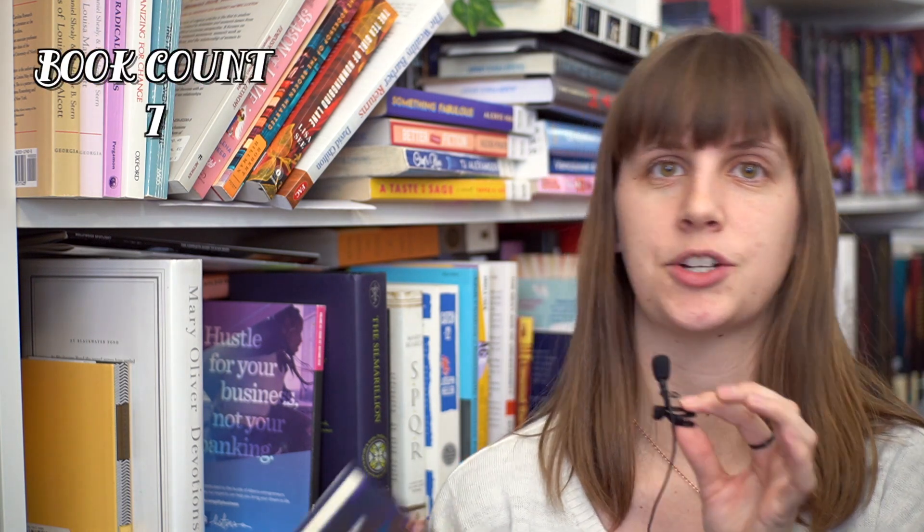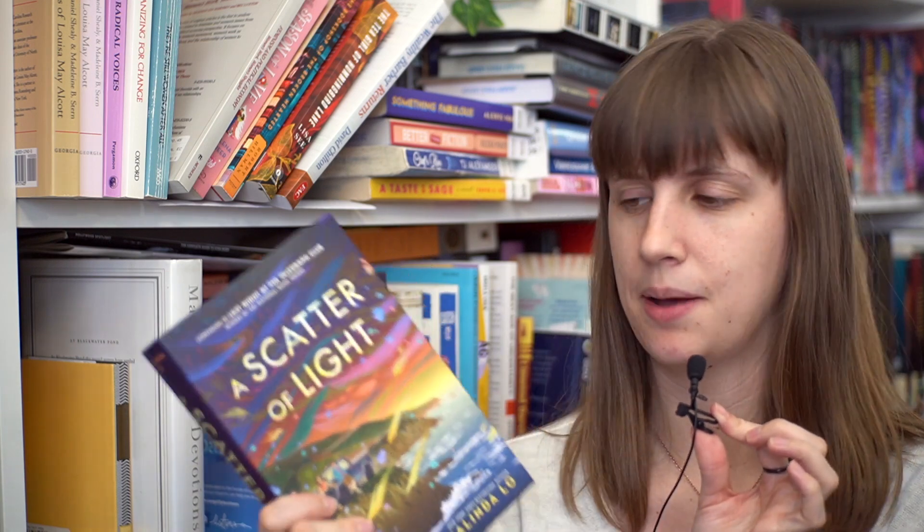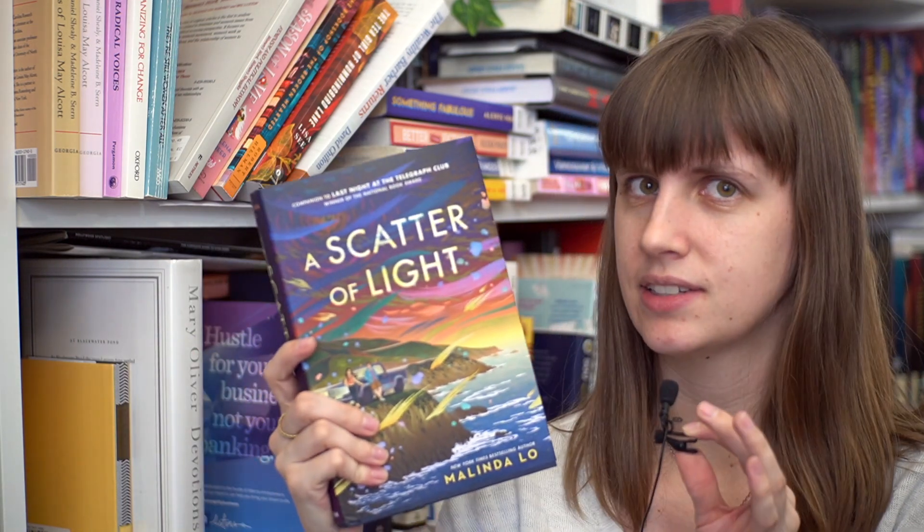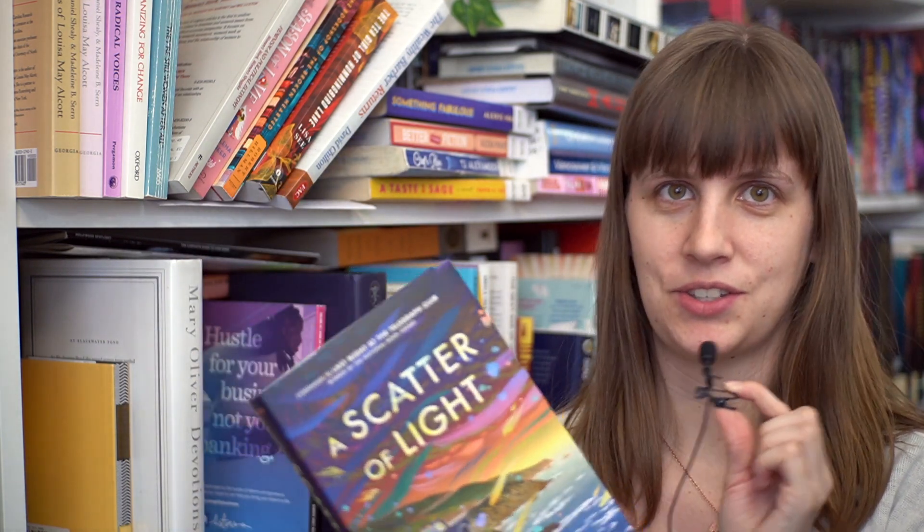Then another book that was sent to me because I took part in an up and coming books presentation so that is A Scatter of Light by Melinda Lowe. I really loved Last Night at the Telegraph Club by this author and look at this cover. Isn't it stunning? This is a whole finished copy hardcover. Got it for free. Just like so lucky. Yeah thank you so much to Penguin Random House for sending this to me. It's gorgeous. So this is a like queer coming of age story set around the time when the Supreme Court in the U.S. were talking about legalizing gay marriage and I think it does feature the characters from Last Night at the Telegraph Club like when they're older because it's set like 60 years after that. So really excited to read this. We love a sapphic book and we love that cover. It's gorgeous.